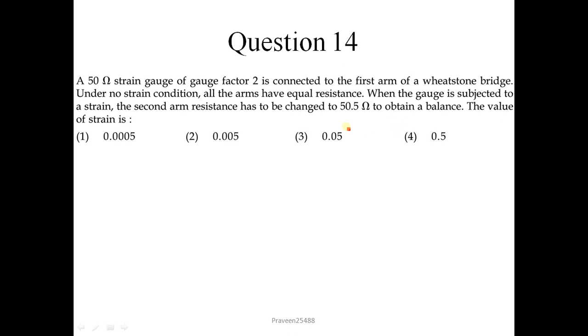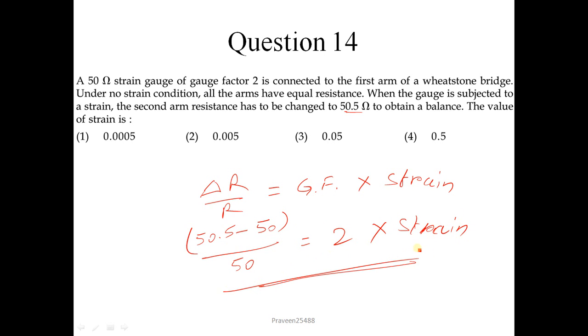Question number 14: A 50 ohm strain gauge of gauge factor 2 is connected to the first arm of a Wheatstone bridge under no strain condition. All the arms have equal resistance. When the gauge is subjected to a strain, the second arm resistance has to be changed to 50.5 ohm to obtain balance. The value of strain is. We know the relation: del R upon R equals gauge factor into strain. The difference in resistance is 50.5 minus 50, which is 0.5, upon R which is 50 ohm. Gauge factor is 2. On solving this, we will get the strain equals 0.005. So correct answer is 2.